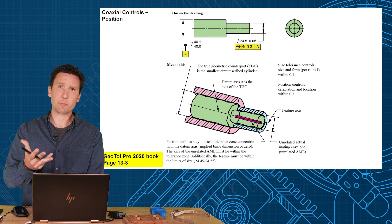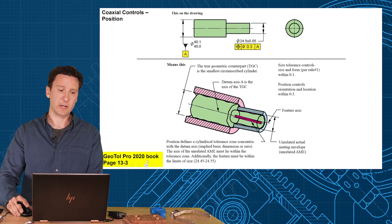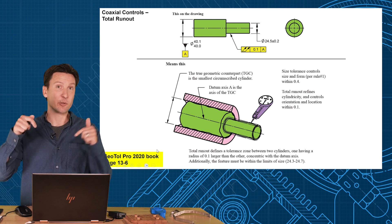And these same pictures and descriptions can be found in the GeoTol Pro Book on page 13-3 and also on 13-6. You can find a link to that also in the description below.